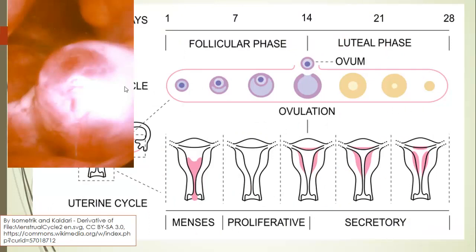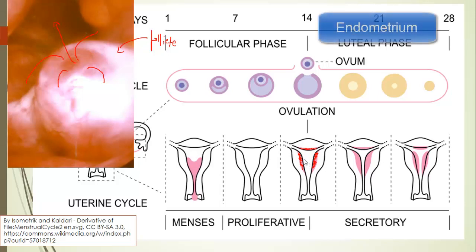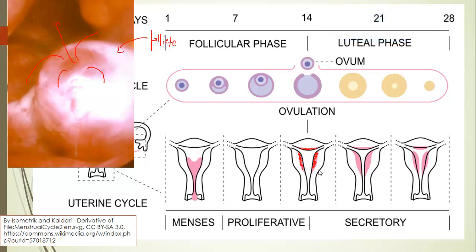All this is to control when this follicle here — inside an ovary — ruptures, bursting open to release the ovum. This is ovulation. We want this follicle to rupture just at the right time so that an ovum is released when the lining of the uterus is at just the right thickness, so that if an ovum is fertilised and gets to the uterus, the endometrium is thick enough to receive it and has a good enough blood supply to supply that developing embryo with all the oxygen and nutrients it needs.